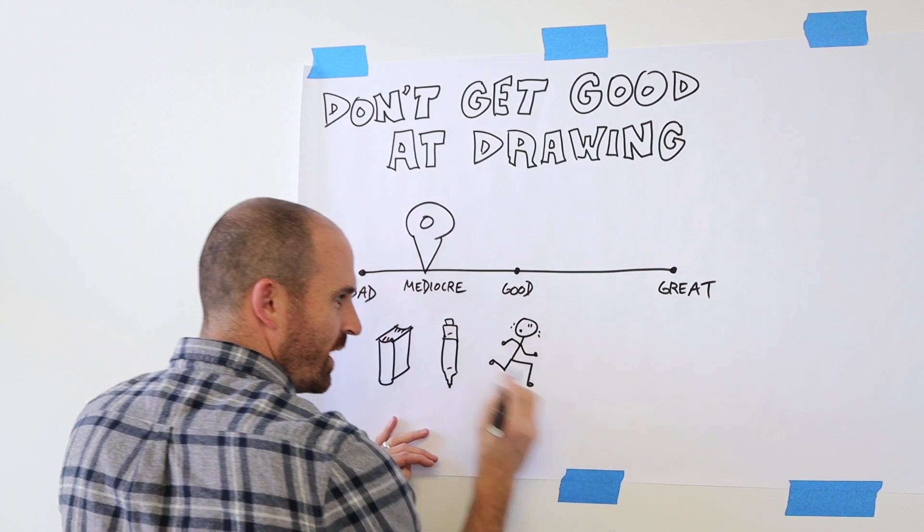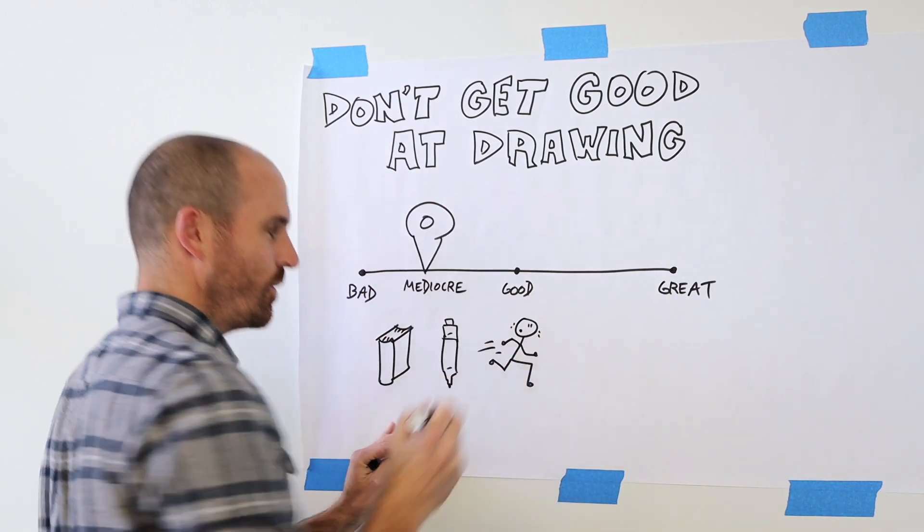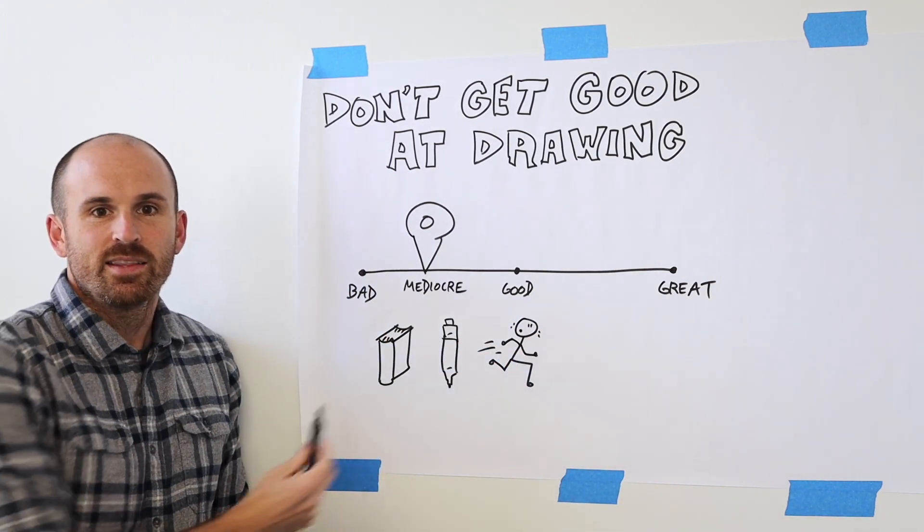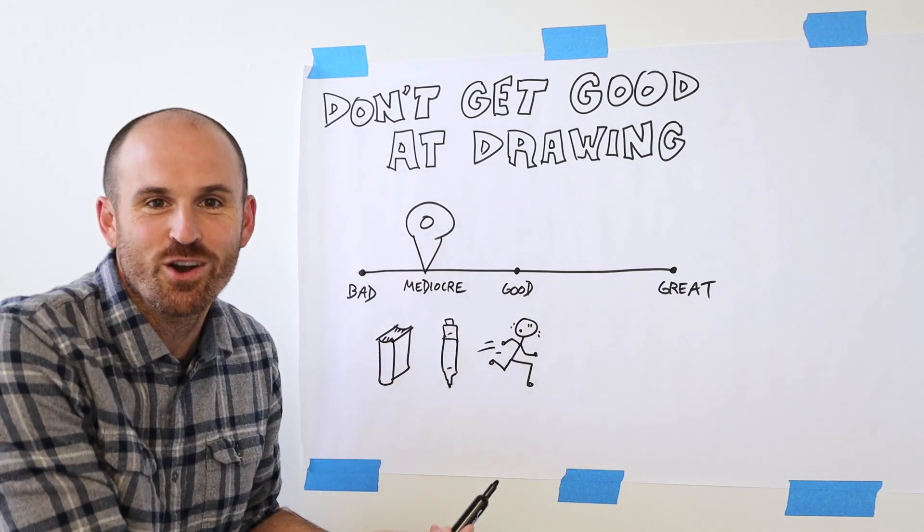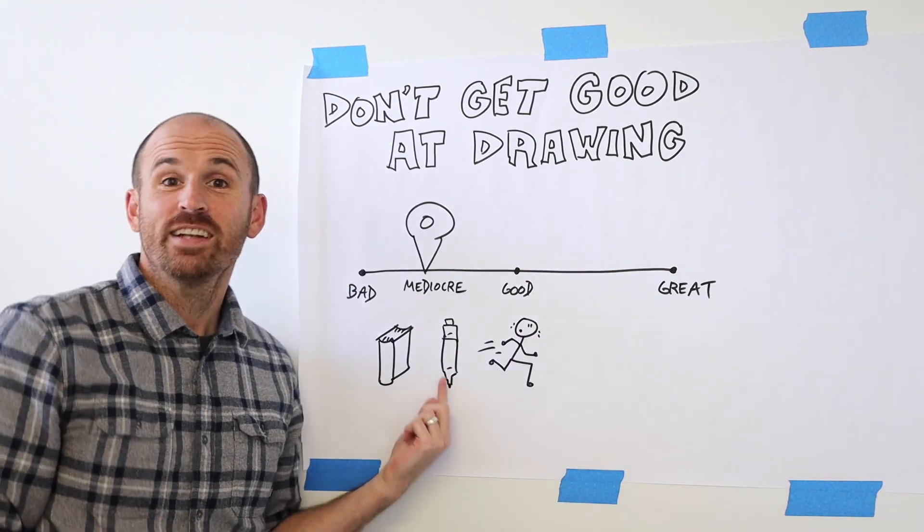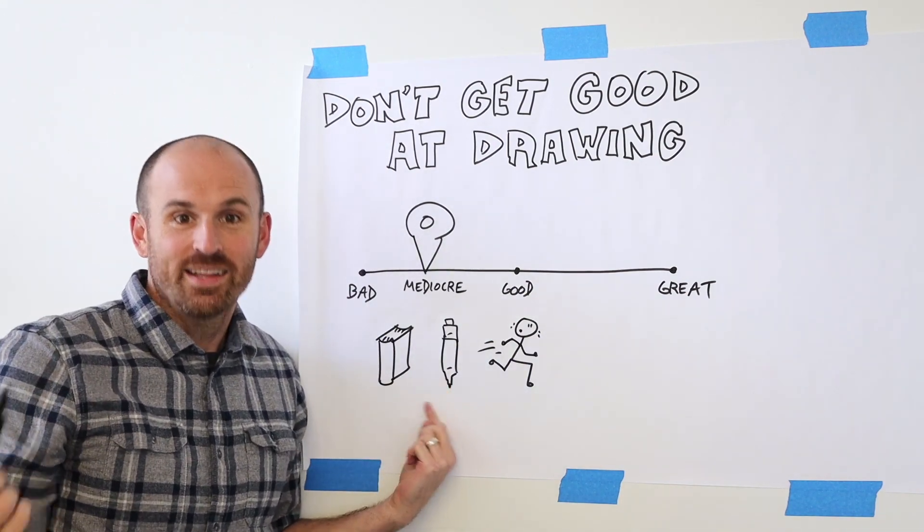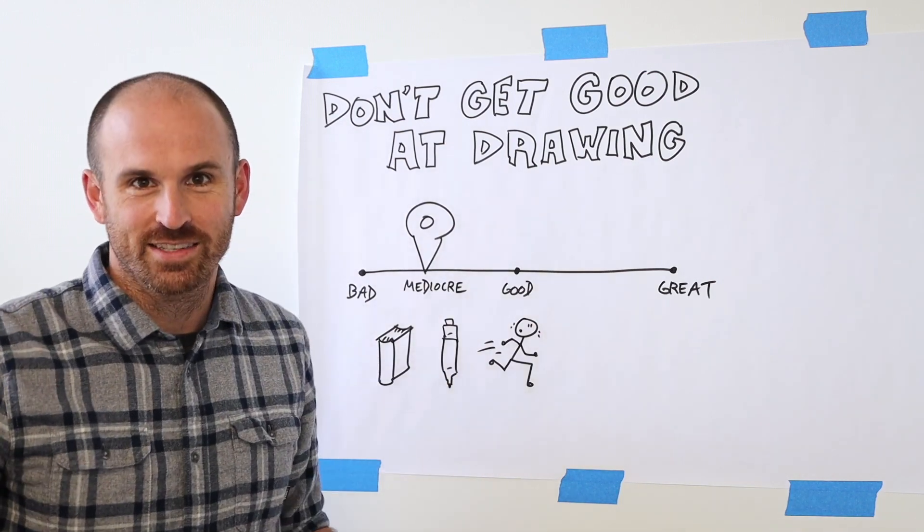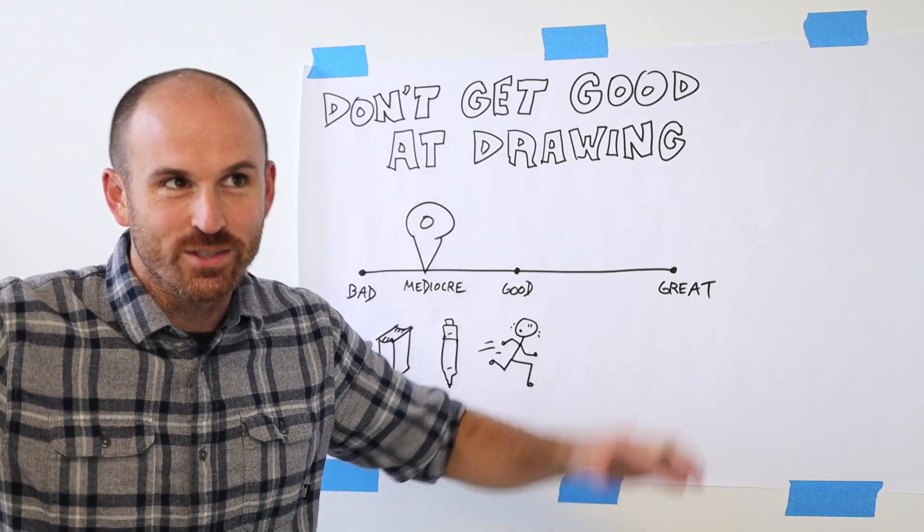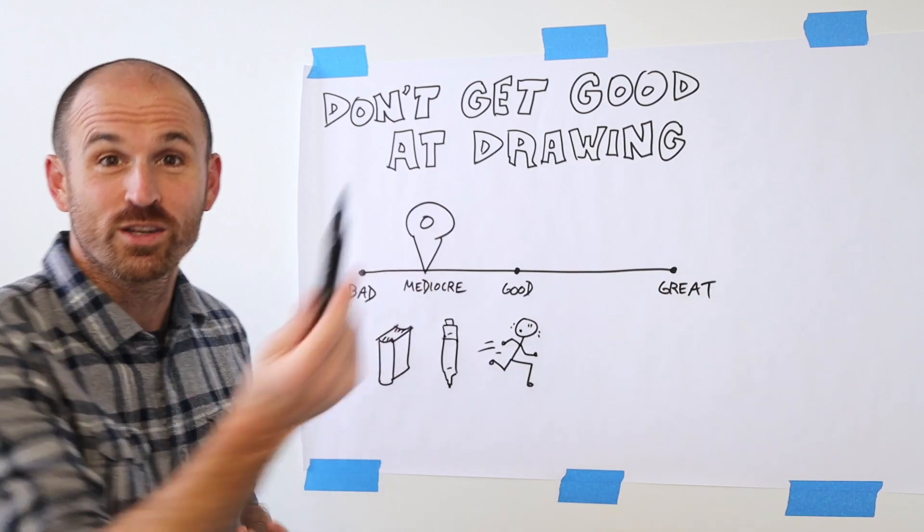Maybe this guy sweating a little bit. Maybe he's going fast. So you add in some motion lines. These aren't particularly good drawings, but they're an effective form of communication.